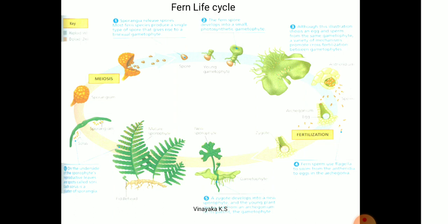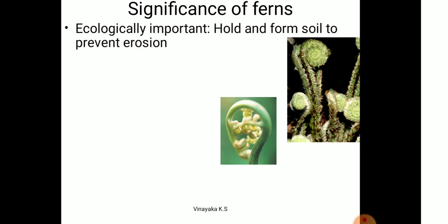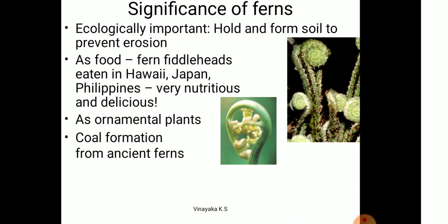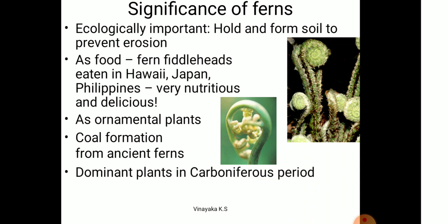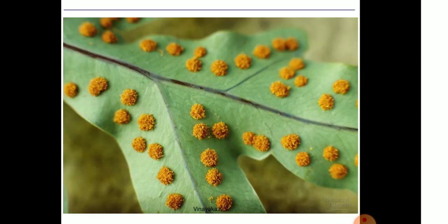The significance of ferns: ecologically they play a very important role — they help prevent soil erosion. Some fronds (young shoots of ferns) are used as food in some places, and they are also used as ornamentals. Especially during the Carboniferous period they were very dominant on the earth's surface, which is why they are called carbon-making sources and helped in coal formation.